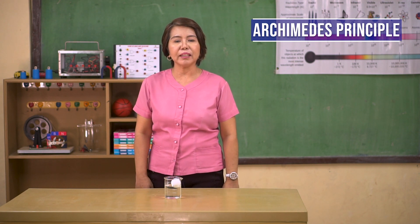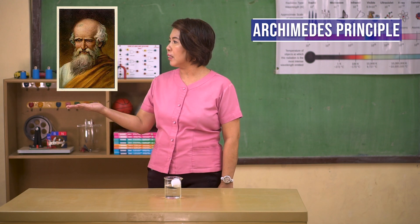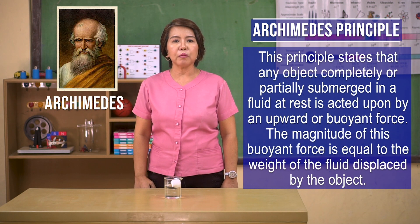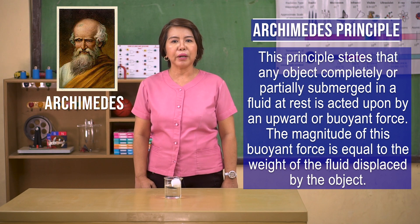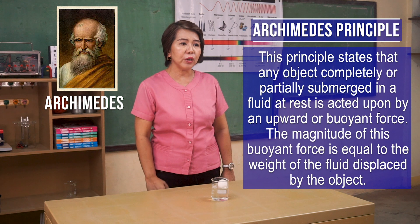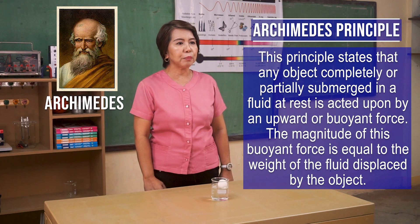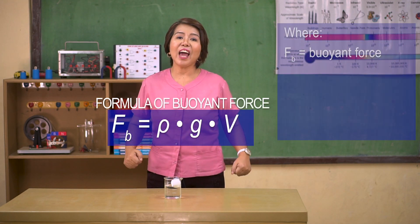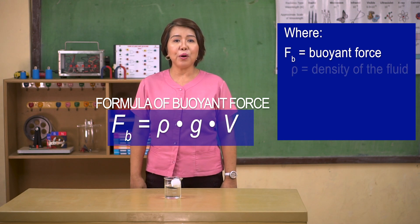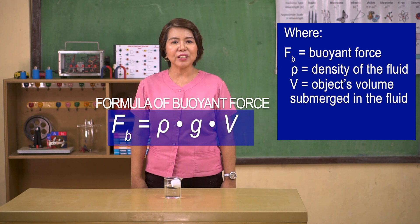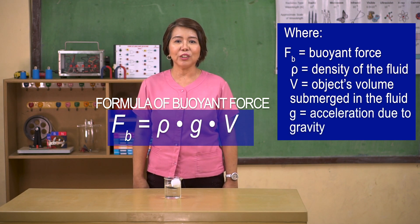Archimedes' principle was discovered by the ancient Greek mathematician and inventor Archimedes. It states that any object completely or partially submerged in a fluid at rest is acted upon by an upward or buoyant force. The magnitude of this buoyant force is equal to the weight of the fluid displaced by the object. It can be mathematically written as F sub B equals rho times V times g, where F sub B is the buoyant force, rho is the density of the fluid, V is the object's volume submerged in the fluid, and g is the acceleration due to gravity.